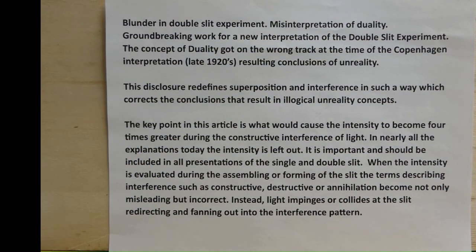Blunder in double-slit experiment. Misinterpretation of duality. Groundbreaking work for a new interpretation of the double-slit experiment. The concept of duality got on the wrong track at the time of the Copenhagen interpretation in the late 1920s, resulting in conclusions of unreality. This disclosure redefines superposition and interference in such a way that corrects the conclusions that result in illogical unreality concepts.